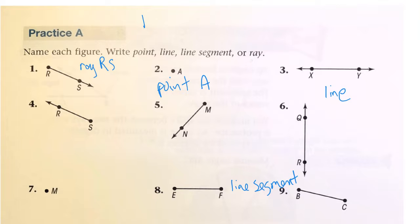And then we can label this as line XY. And this is line segment EF.